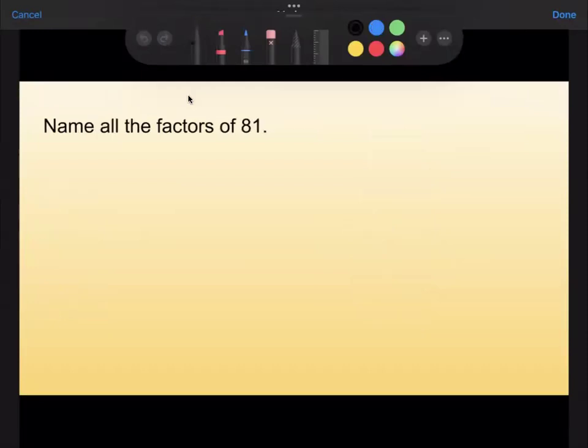Here's our next one. For this one, we are being asked to name all the factors of 81. So we're not getting choices, but that's okay. We're just going to list out the factors. So let's start with 81 up here, and let's start with 1 times 81. We know that works.